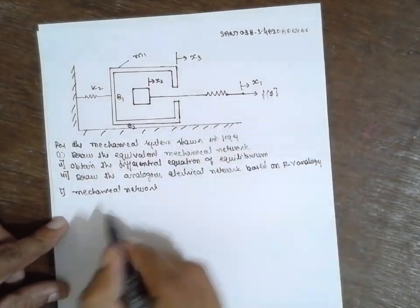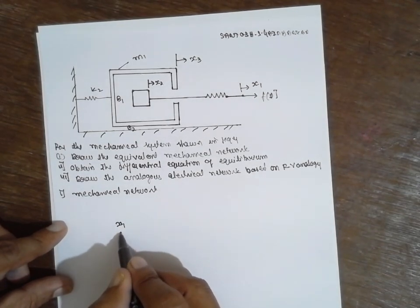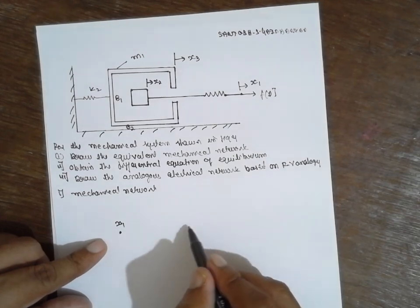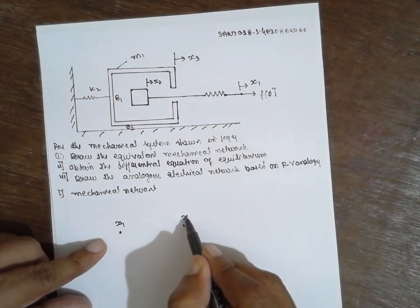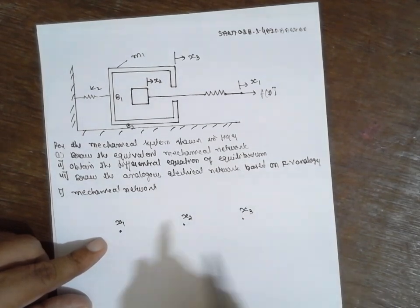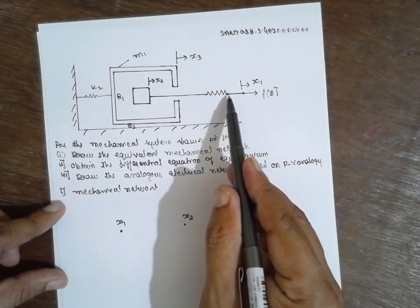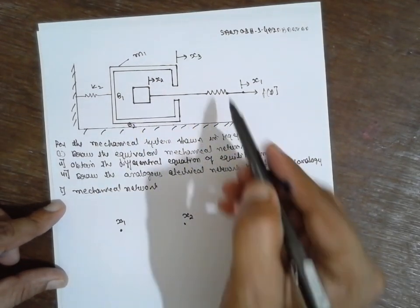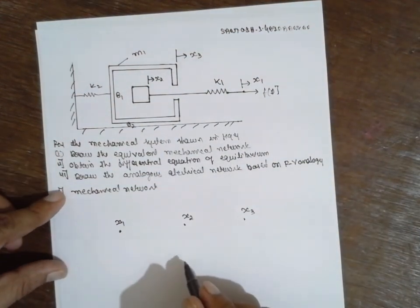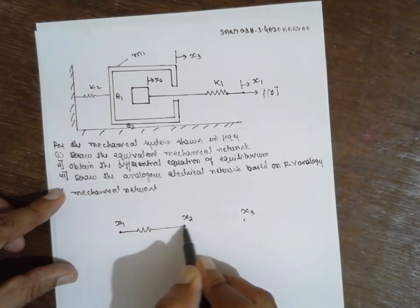First this is x1. I will draw the node x1 here. Next x2 will be here, x2, x3, node x3. Now node x1 and x2, there is a k1 value present here. Now write k1 value between these two, x1 and x3, k1.